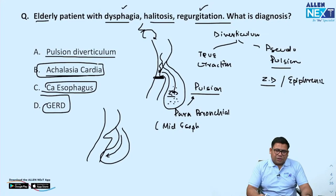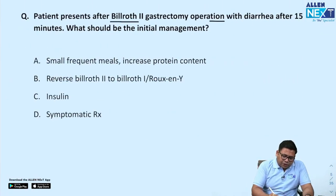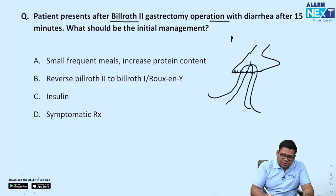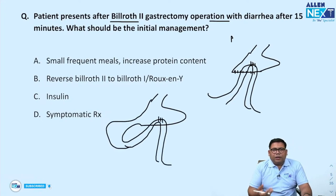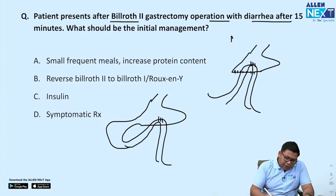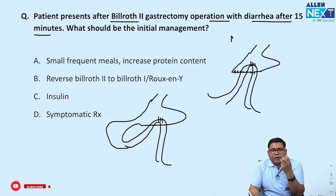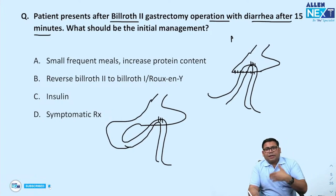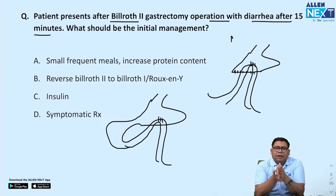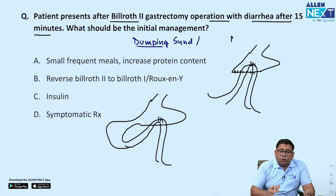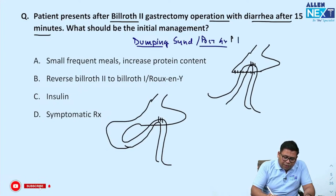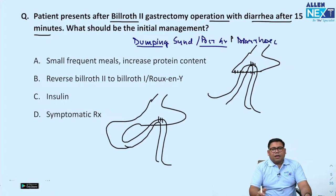Next: patient after Billroth II gastrectomy. Billroth II is a loop gastrojejunostomy. Patient presents with diarrhea within 15 minutes. This happens because food directly enters the intestine, and the acid goes directly into the intestine neutralizing the pancreatic juices. There are two concepts: dumping syndrome and post-gastrectomy diarrhea. Post-gastrectomy diarrhea is either because of dumping syndrome or acid neutralization. Both will improve with time and lifestyle changes.